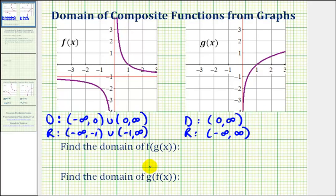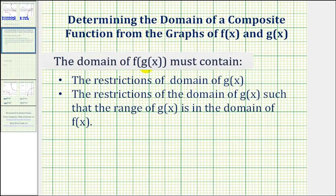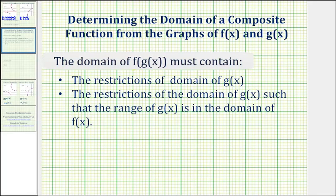Now let's consider the domain of our composite functions. The domain of f of g of x must contain the restrictions of the domain of the inner function g of x, and also restrictions such that the range of g of x is in the domain of the outer function f of x. We start with the domain of the inner function, and because the output of the inner function becomes the input into the outer function, we may have more restrictions if the outputs of g are not possible inputs into f.